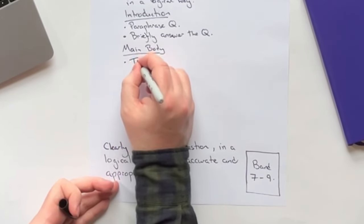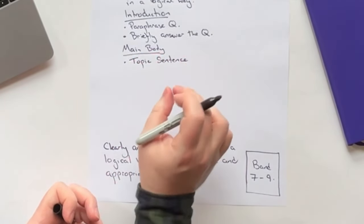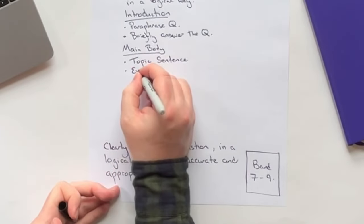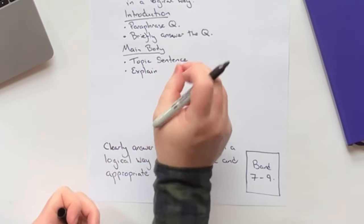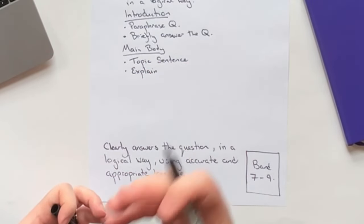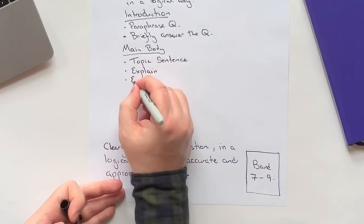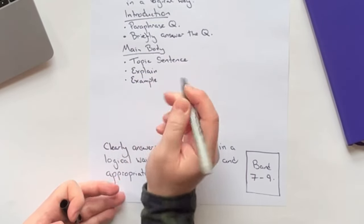And what will be included in those are our topic sentence, which is the main idea of the paragraph, explain how does that idea answer the question to go into detail here. And then you can help the example, help the examiner, by putting an example in there.